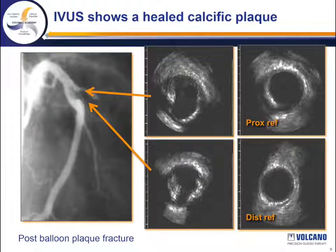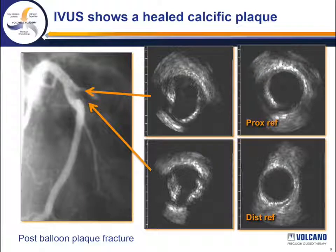Let me outline the area in these two sections — you can appreciate the kidney bean-shaped appearance in the more proximal section and the clear dissected calcified plaque in the inferior picture.